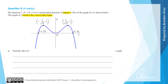For part a we're asked to find the rule of f. So f of x has x-intercepts at negative 1, 0 and 1, so we can use a factorized form of a quartic or degree 4 polynomial to help find the equation of this graph.